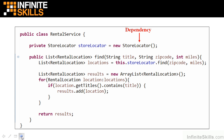The RentalService class was coded using a traditional approach. You'll see that it has a field named StoreLocator that is instantiated using the new operator and the StoreLocator constructor. Within the Find method,